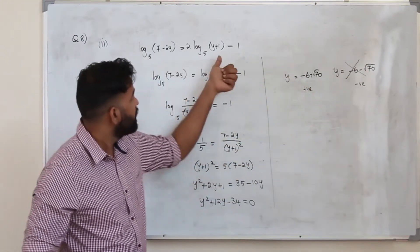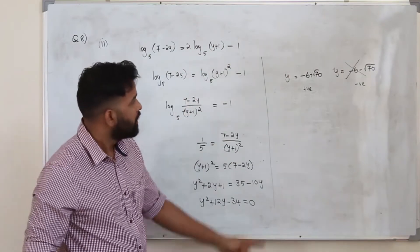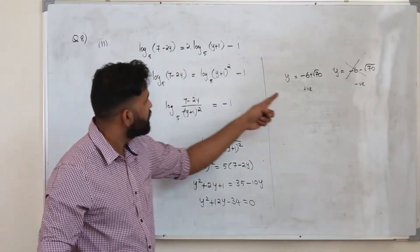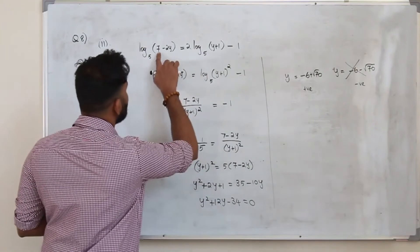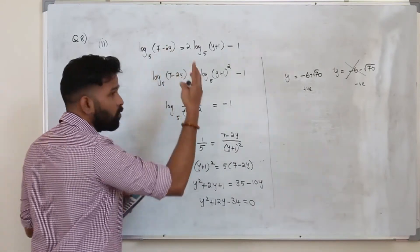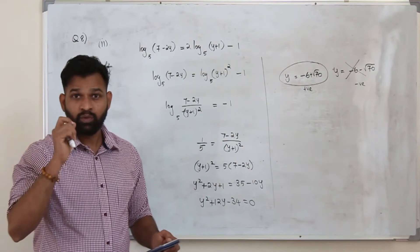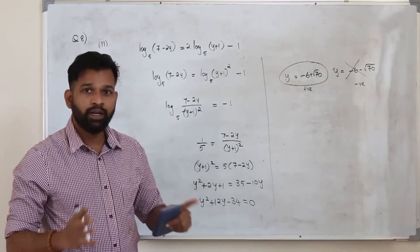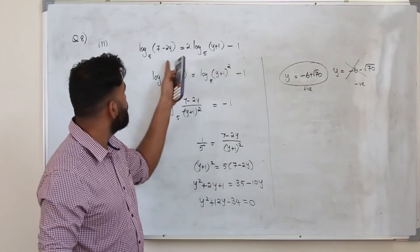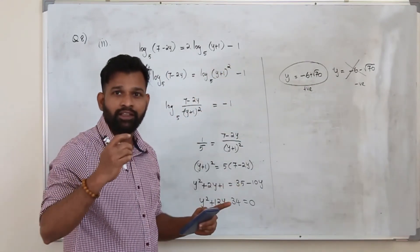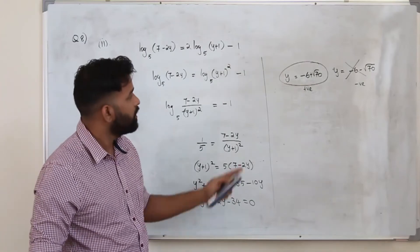When you substitute the positive value, y equals minus 6 plus square root of 70, into the equation, all the arguments of the logarithms are positive, so it is valid. Therefore we take only this as our solution. This is very important: whenever you get two solutions, you are not supposed to neglect a value just because it is negative, nor accept a value just because it is positive. You must always substitute back into the logarithmic equation and check whether any logarithmic function results in the log of a negative number — then you can say it is not a solution.